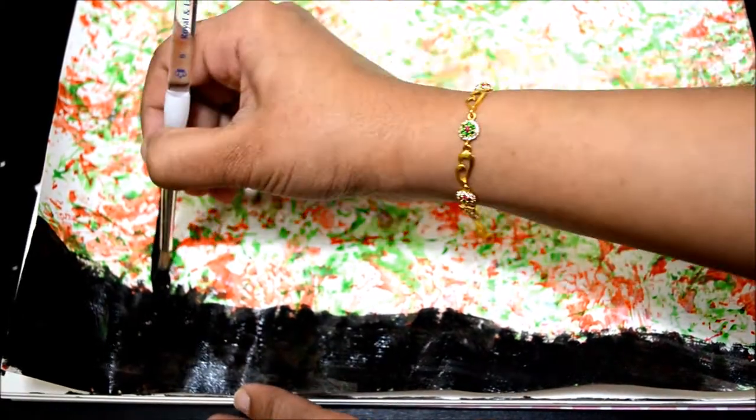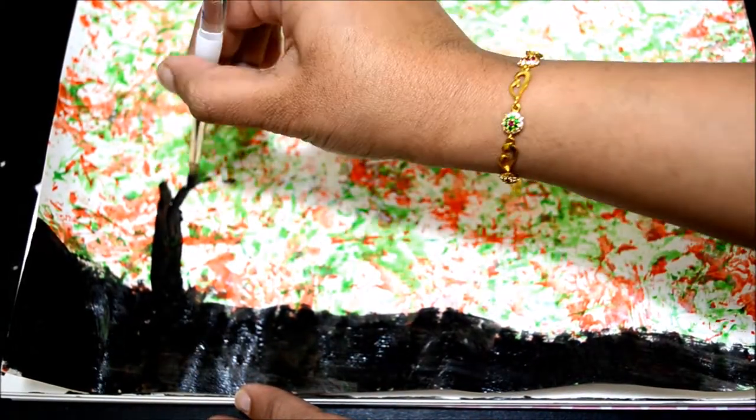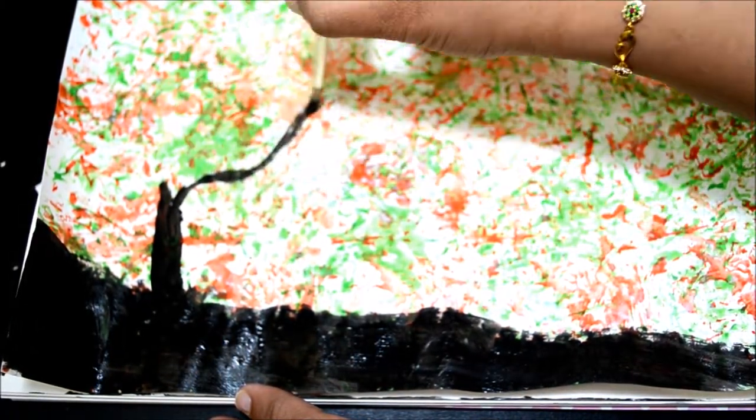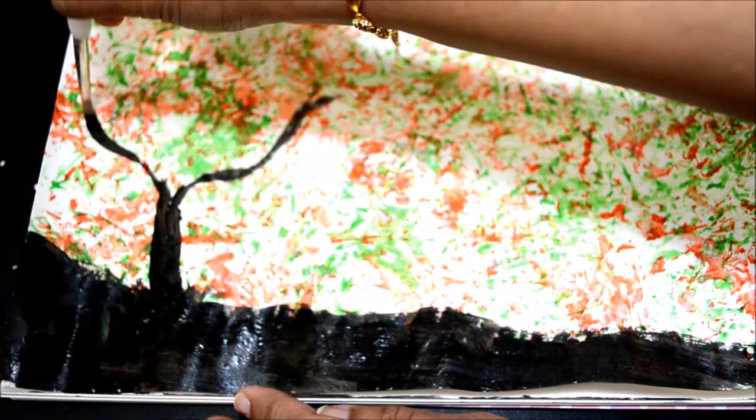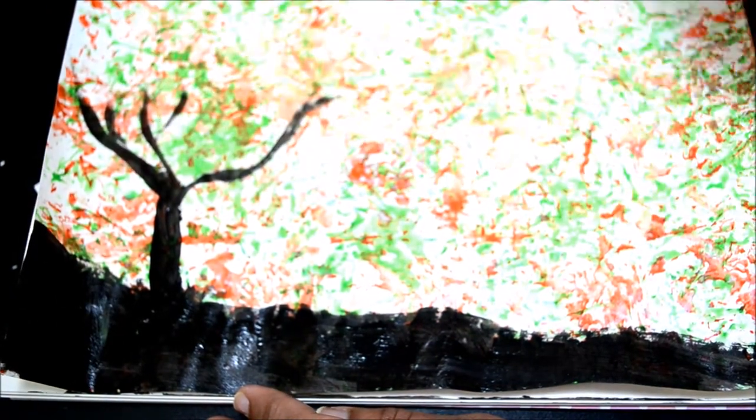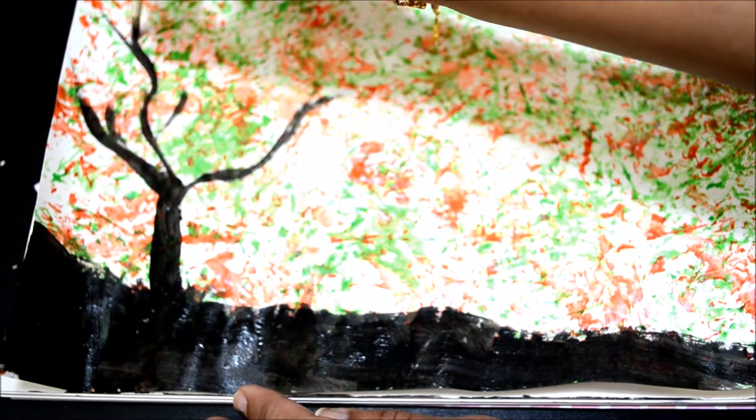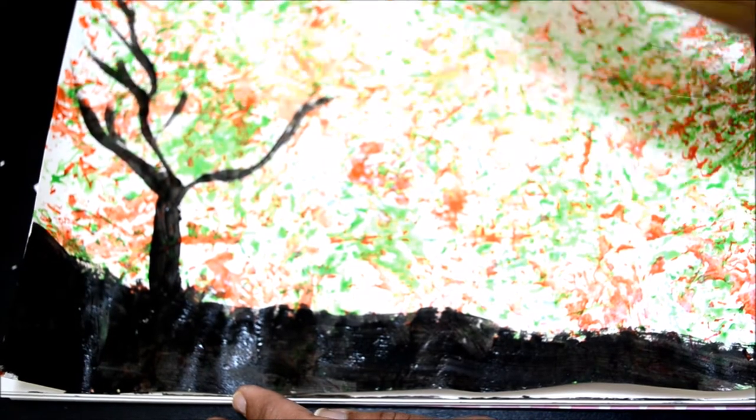Then I have painted a tree bark and tree branches. This paper curled up because of paint, so what I did here is after painting everything I have just ironed this paper to make it more straight.